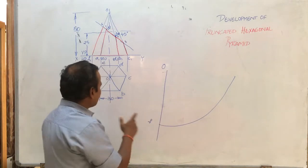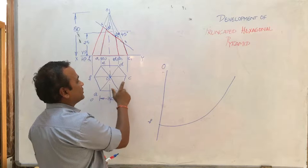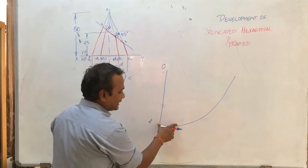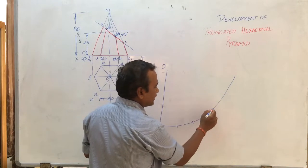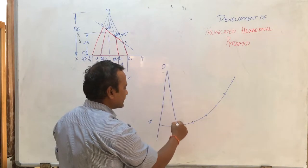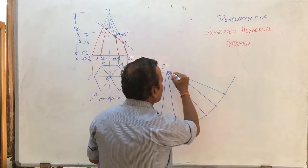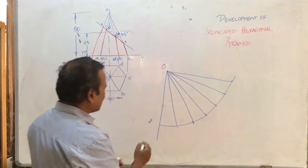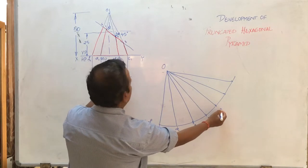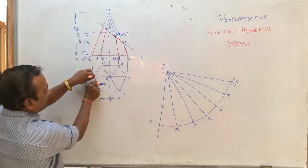Now measure 30mm with the compass and cut this arc into six equal parts — one, two, three, four, five, six — since a hexagon has six faces. Join all six division points to the apex O. This point refers to F, the next is A, then B, C, D, E, and back to F. Just imagine you are cutting this pyramid and opening it up — that is what we are doing here.